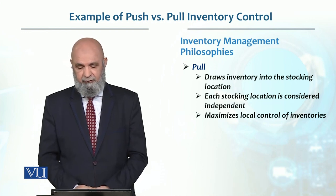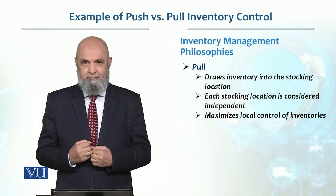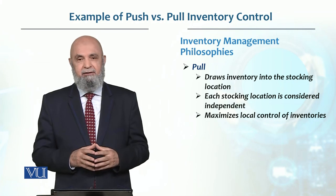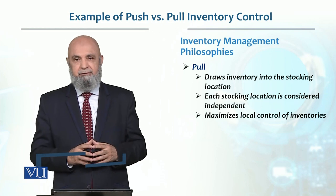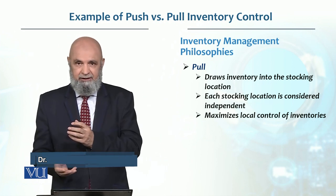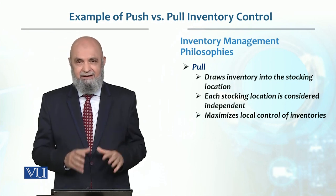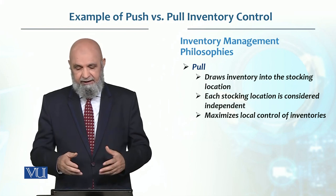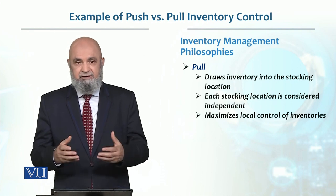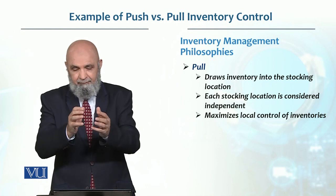In the pull inventory system, stocking locations — for example, warehouses — place orders when they need material. The material is essentially pulled up to meet requirements. Each stocking location is considered independent, and it handles its own orders, which maximizes local control.